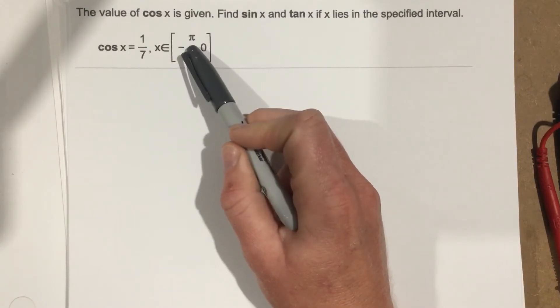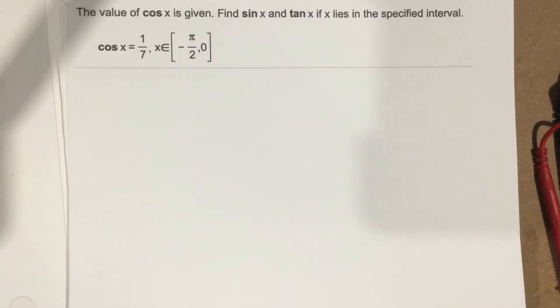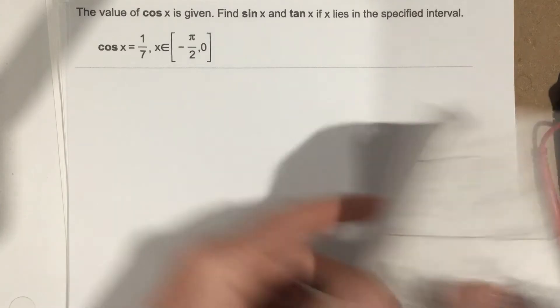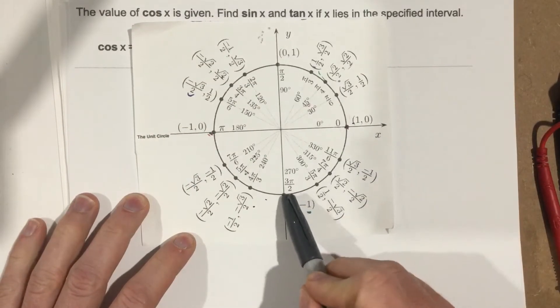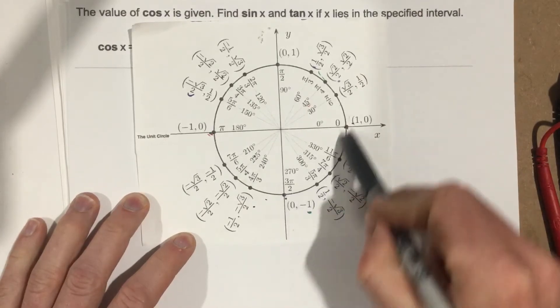Well negative pi over 2, if we look at the unit circle, negative pi over 2 is down here, 0 is here, so we're lying in the 4th quadrant.